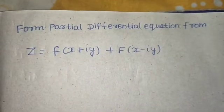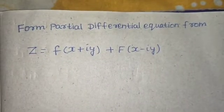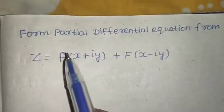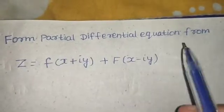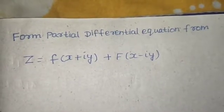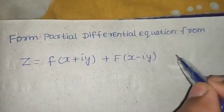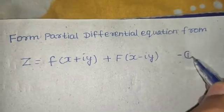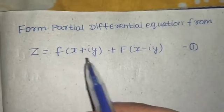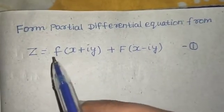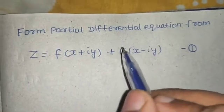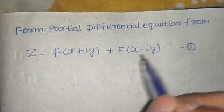Hello everyone, let's look at a question from partial differential equations. We need to form a partial differential equation from the given equation — let's call it equation number one. What we have to do is eliminate the arbitrary functions f(x + iy) and F(x − iy).